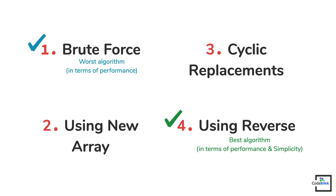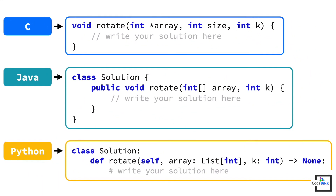Before I start explaining either of these two algorithms, I want to show you two or three lines of code that are common for both implementations and will help you to optimize your solution. In most exams you will have a function like this to write your solution. You can observe that in the case of C, the parameter list of the rotate function contains three parameters.